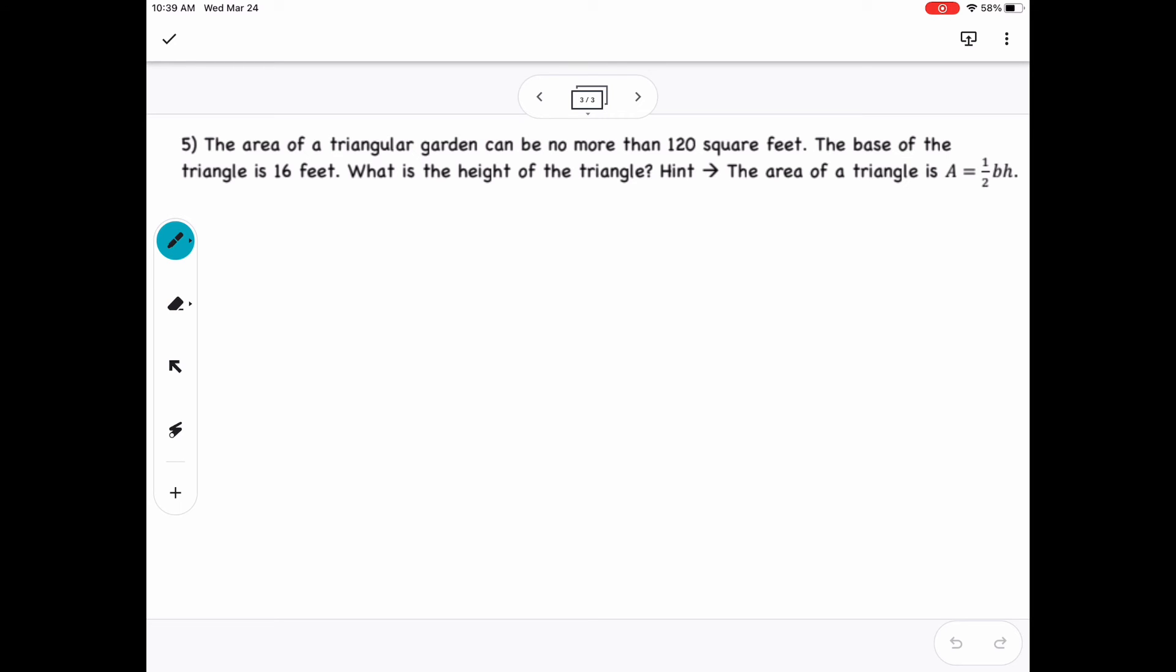And then finally for number 5, here we have more of a word problem. So it says the area of a triangular garden can be no more than 120 square feet. The base of the triangle is 16 feet. What is the height of the triangle? Hint, the area of a triangle is area equals one-half base times height. So area is your A, and that's what that's representing. Now in the first part, it says no more than, so that would be our less than or equal to sign. And then no more than 120 square feet, so we would add that in there. So the area should be no more than 120 square feet.